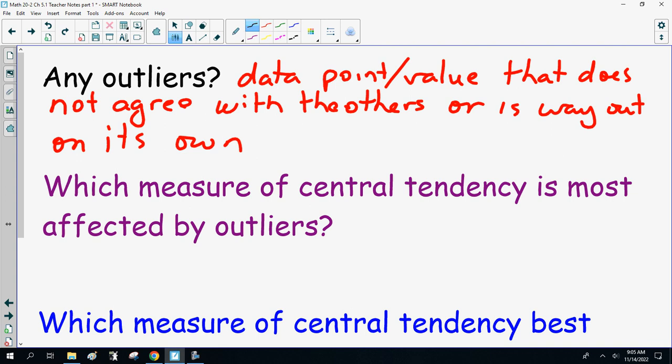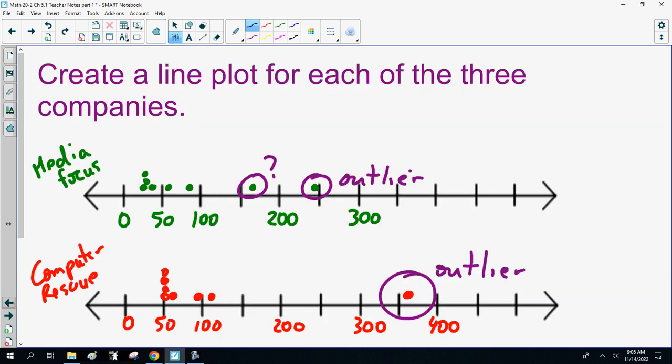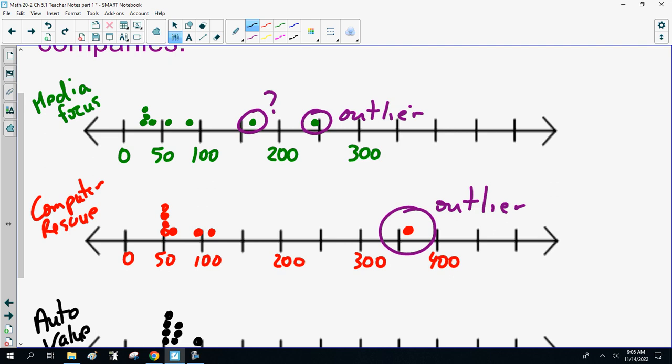Which measure of central tendency is most affected by outliers? Well, the mean or the average. So, we go back here. Yes, you see here, the outliers have already been circled.